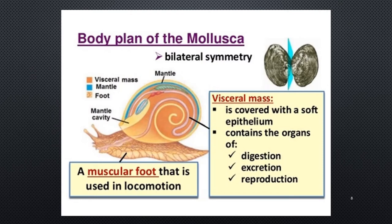Here is the general body plan of a mollusc — again, bilateral symmetry. It contains what we call a visceral mass covered with soft epithelium, and that's where the organs are contained: digestion, excretion, and reproduction organs are all within the visceral mass. It also has what we call a mantle, and that mantle can produce a shell — it doesn't always, but it can. And then it also has a muscular foot for motility.